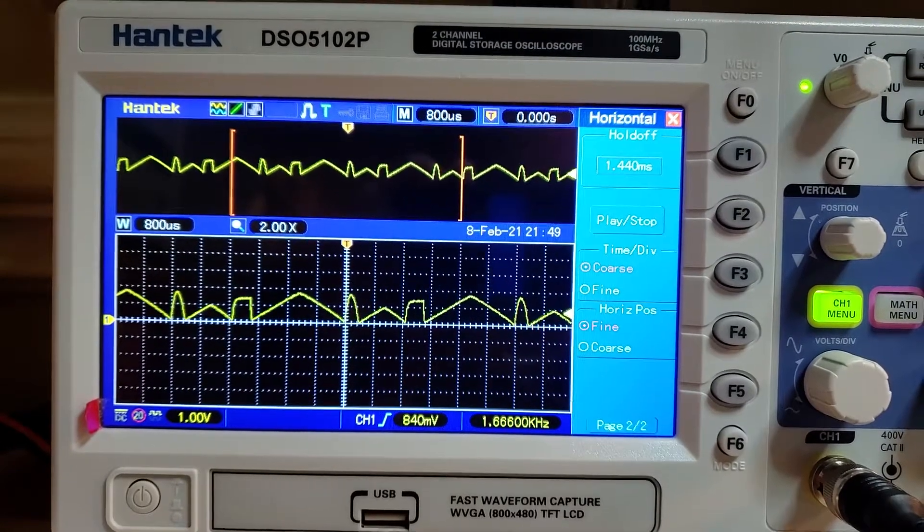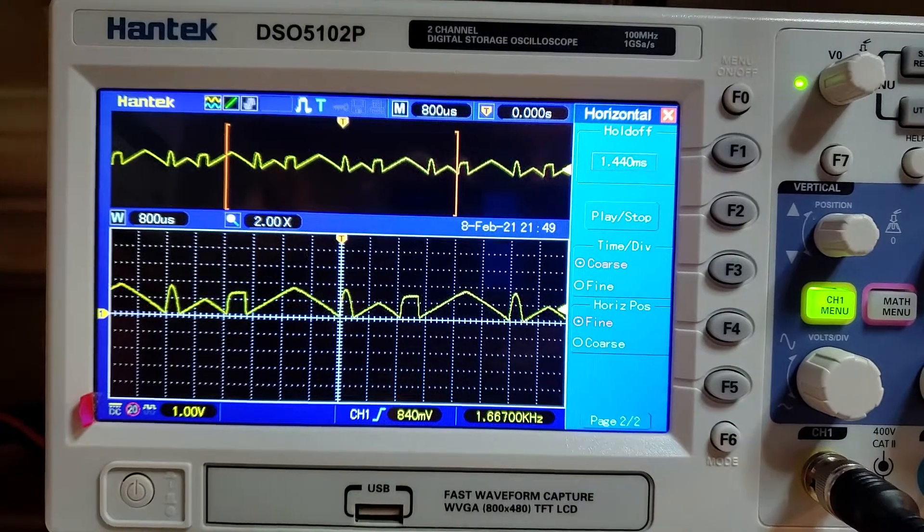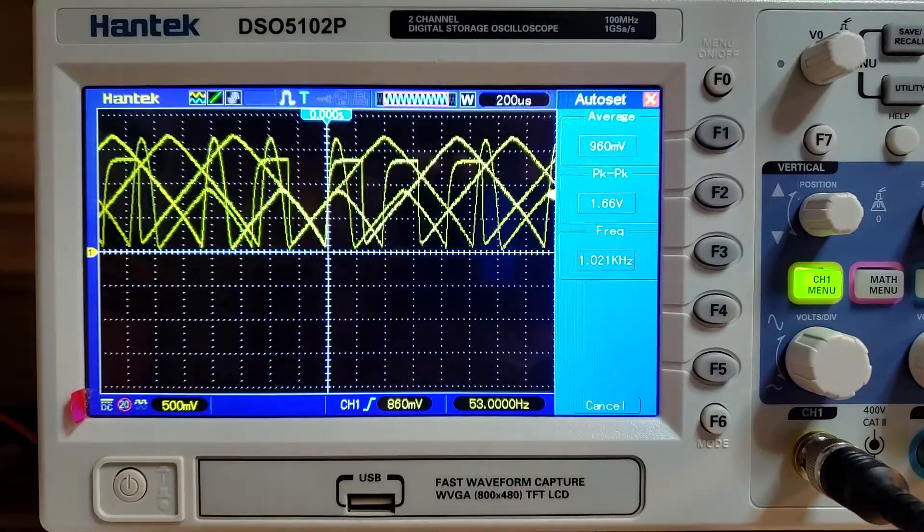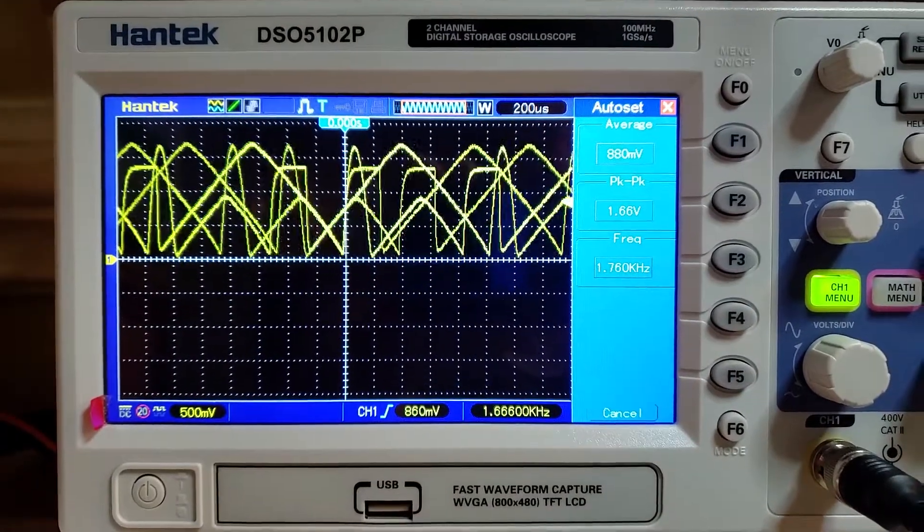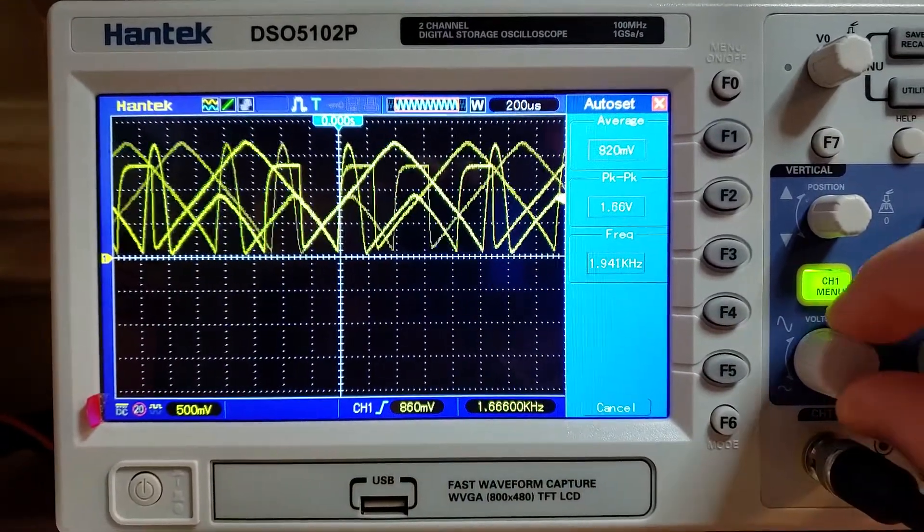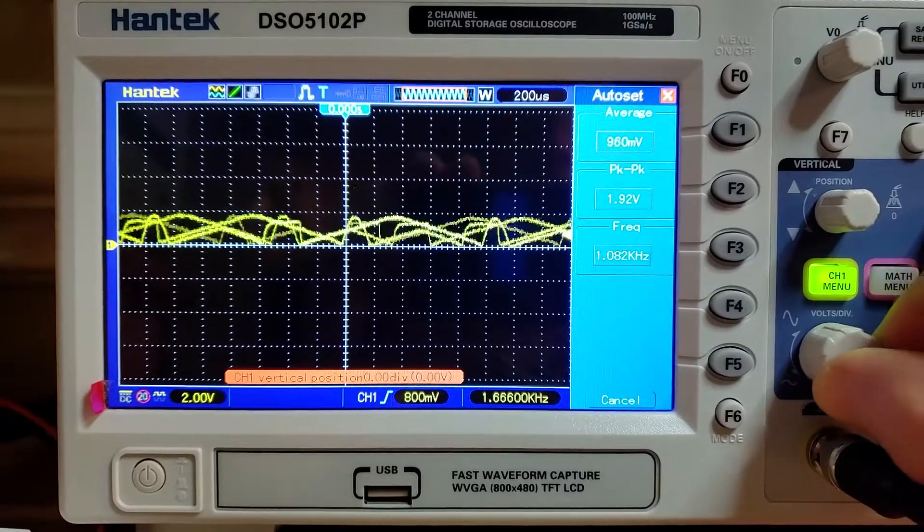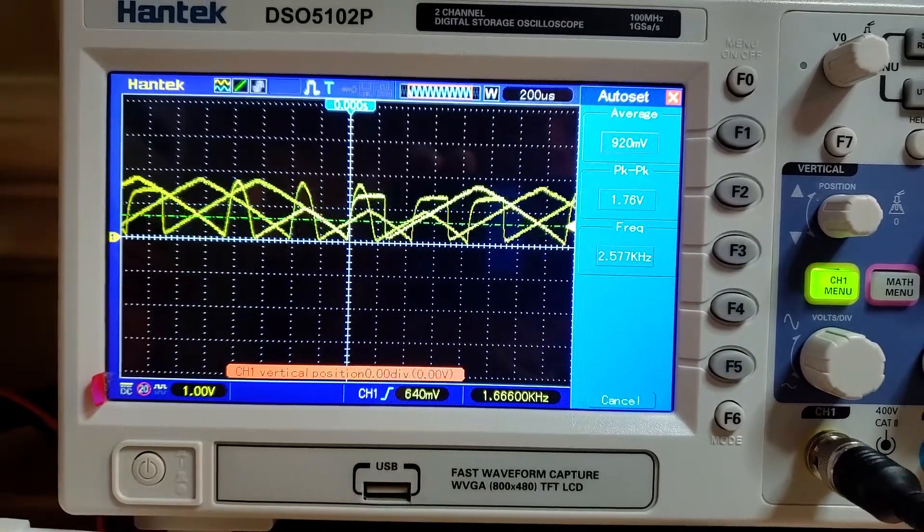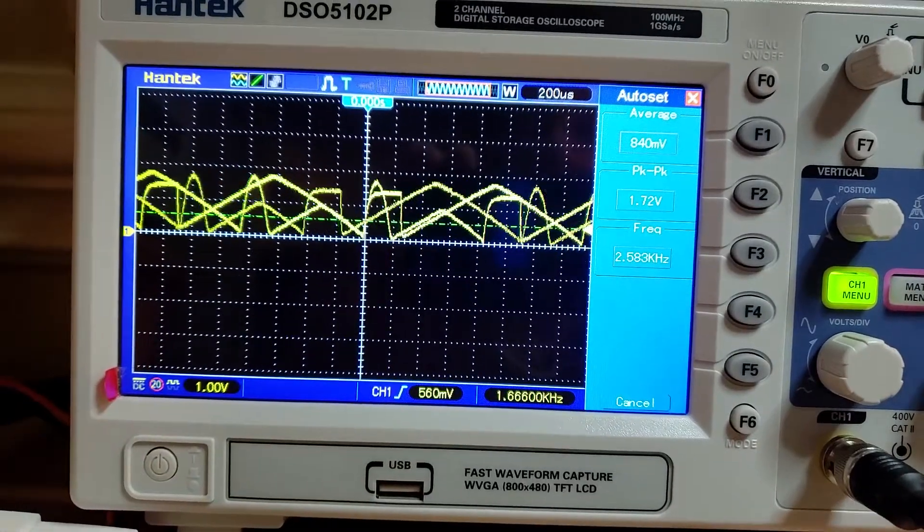Which requires the hold-off here. I'll show you. We'll do an auto-set. And there we go. Isn't it pretty? Let's get a trigger in there. Drop the voltage down a little. Get a trigger in. That's about all you're going to be able to trigger without much stability. So you've got to add hold-off.